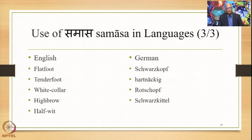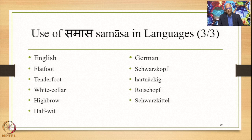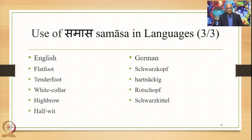Samasas are used not just in Sanskrit and other related Indian languages but in several languages. Taking two examples — English and German — flat foot, tender foot, white collar, high brow, and half wit are examples of Bahuvrihi Samasas in English. Schwarzkopf, Hartknickig, Rotschoff, and Schwarzkittel are examples of Bahuvrihi Samasas in German. There are many examples of this kind in various other languages as well.